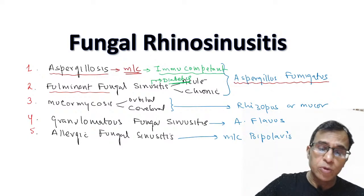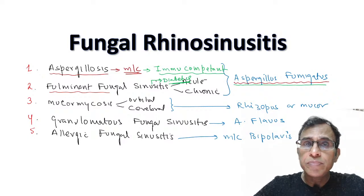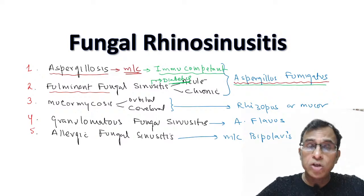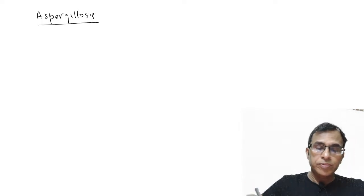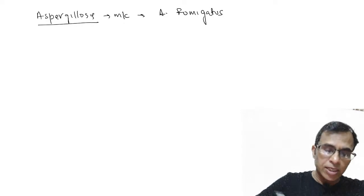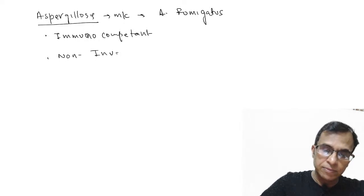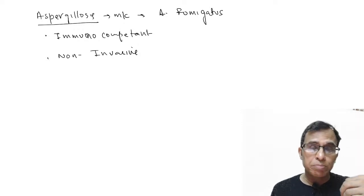What difference does immunity make if the fungus is the same? In an immunocompromised person, this same fungus behaves as an invasive fungal disease. But in an immunocompetent person, it is a non-invasive fungal disease. So aspergillosis — the most common fungal disease of the nose, caused by Aspergillus fumigatus — is seen in immunocompetent persons and is a non-invasive fungal disease. Because it is non-invasive, the fungus goes into the nose but does not invade the tissue.